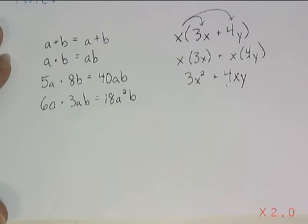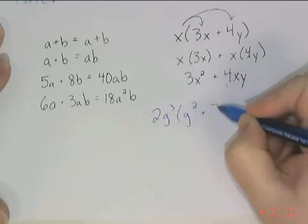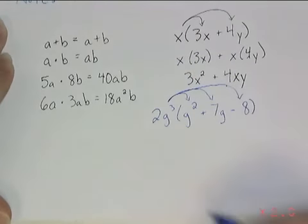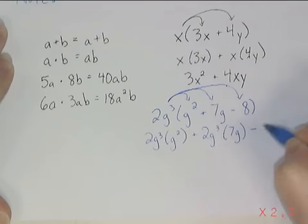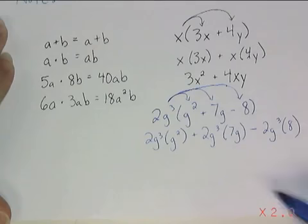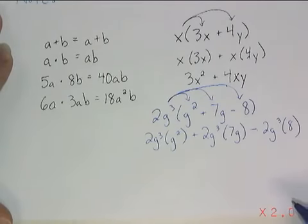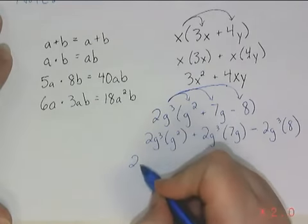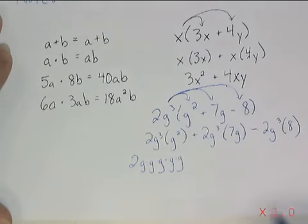Let's take a look at another example just to make sure we've got it. 2g to the third power multiplied by the quantity of g squared plus 7g minus 8. Distribute this term to everything in the grouping symbols: first to the g squared, then to the 7g, then to the 8. Notice I am just copying the addition and subtraction signs in the middle. 2g to the third power times g squared — think about writing this out in expanded form. g to the third power is g times g times g, and now we're multiplying that by g squared, which is g times g. It makes it more obvious that we should end up with 2g to the fifth power.